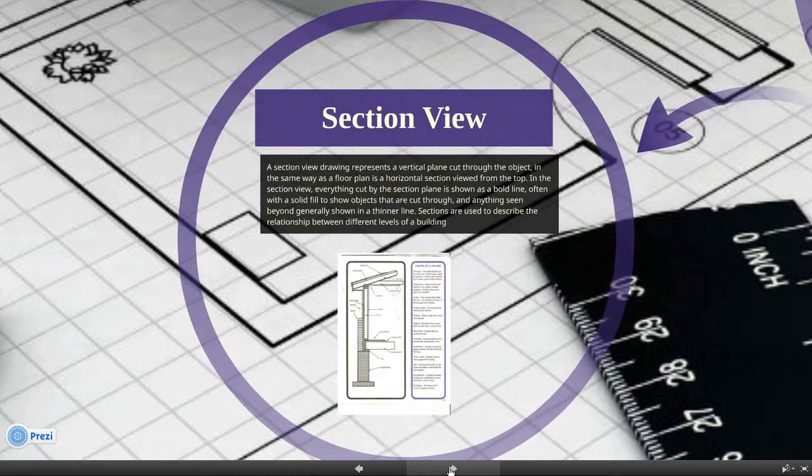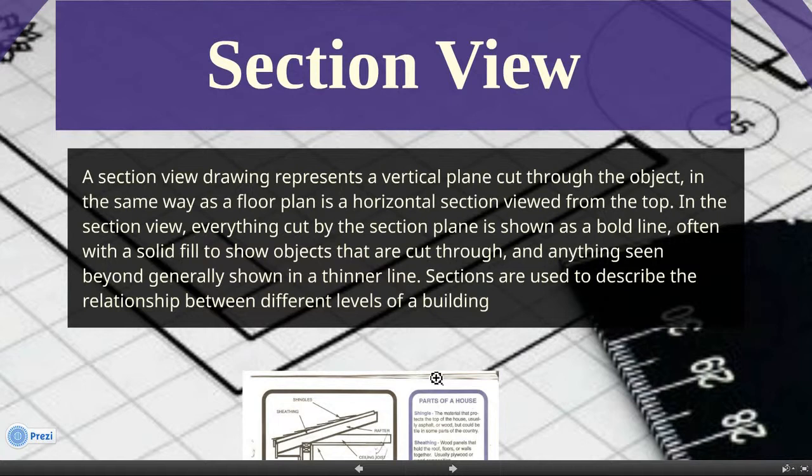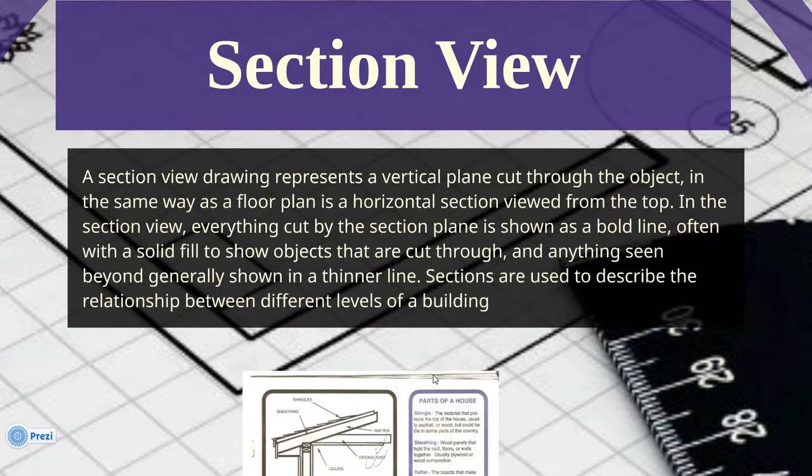The next plan we're going to look at is a section view. This is another drawing you'll have to draw in this class. A section view represents a vertical plane cut through an object. It's basically chopping a house in half and then seeing the different parts of the house.